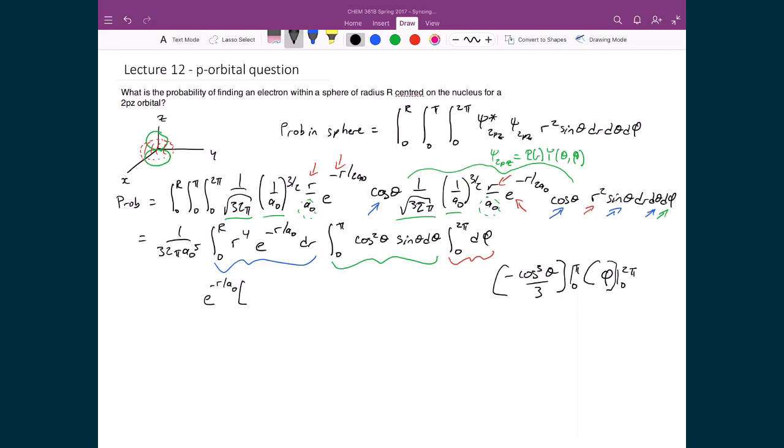The solution to that integral is e^(-r/a₀) times [-24a₀⁵ - 24a₀⁴r - 12a₀³r²